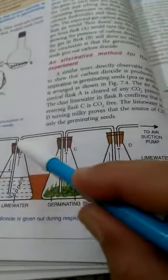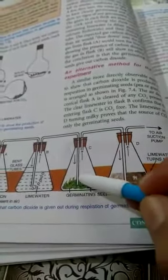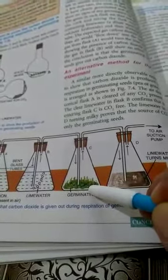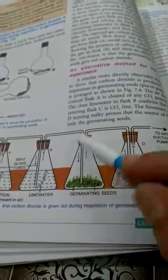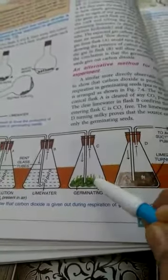Now this carbon dioxide free air when passes to germinating seeds, these germinating seeds will absorb oxygen from that air and release carbon dioxide. Remember we have passed air that is not having carbon dioxide. So carbon dioxide here will be released only by the germinating seeds by their respiration. This carbon dioxide will then pass into lime water and turn lime water milky.